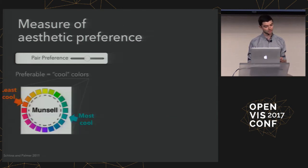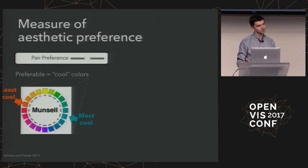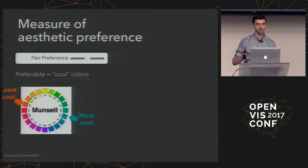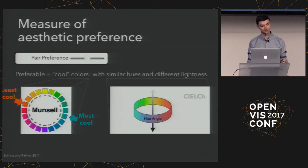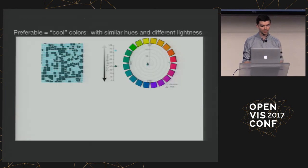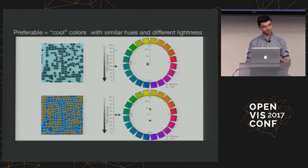The third slider is for aesthetic preference — pair preference — based on a large-scale study by Karen Schloss at Berkeley. Through in-lab evaluation, she was able to quantify on average what people find preferable for color pairs. In general, preference can be predicted by the coolness of colors, similar hues with different lightnesses. Preferable combinations have very different lightnesses, the same hue, and are all cool. Impreferable ones tend to be isoluminant with opposite hue and a warm color.